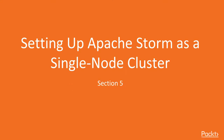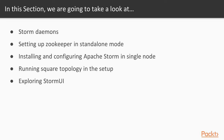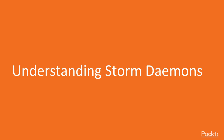Hello and welcome to section 5. In this section, we will learn how to set up our Apache Storm single node cluster. We are going to look at Storm daemons, available Storm daemons, how to set up Zookeeper in standalone mode, how to set up Apache Storm in single node, we'll be running our square topology setup, and we'll be exploring our Storm UI. So let's start with the first video.